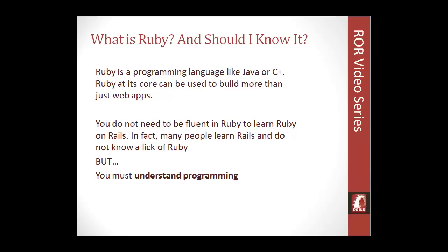Ruby is the programming language that Ruby on Rails runs on — it's like a tongue twister. If you don't know any Ruby at all, you don't really have to worry, because Ruby is a very easy language to learn. What you should have is a basic idea of programming in general — things like variables, functions or methods, conditionals, if statements, just basic programming stuff. A lot of people learn Rails without knowing any Ruby, and that's fine. Chapter 2 is all about Ruby, so we'll actually be learning some of the language and basic programming principles.